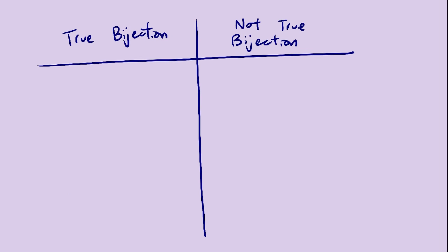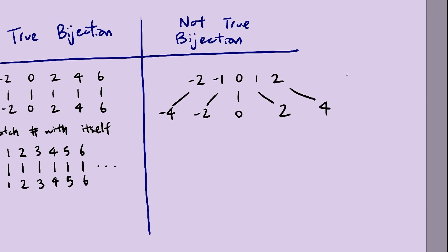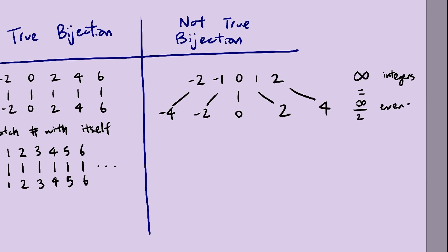Alright, what is a true bijection? First of all, this is definitely a true bijection. Every number gets matched to itself. It makes the most intuitive sense, and as far as we know, it won't lead to any paradoxes. We also know that this is not a true bijection, because if it were, we would just get the infinity equals infinity over 2 paradox.